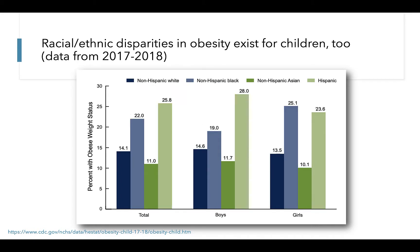It should be noted that there are also significant sociodemographic disparities in obesity among children, mirroring the format we saw for adults with data for boys and girls combined or separated, and racial and ethnic categories in different colors. We see a significantly higher prevalence of obesity for non-Hispanic black children as well as for Hispanic children.